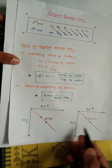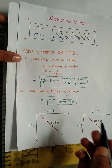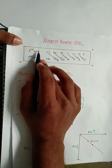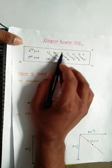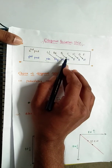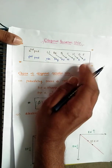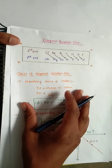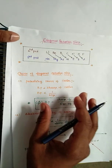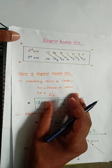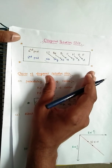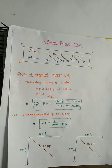These two points — polarizing power of cation and electronegativity of atom — are very important for understanding the diagonal relationship between second and third period elements. These points are also very important for competitive exams such as the Andhra University Common Entrance Exam. If you want more videos, please subscribe to my channel. Thank you very much.